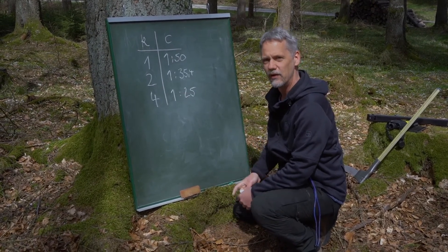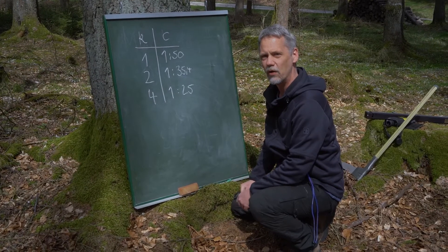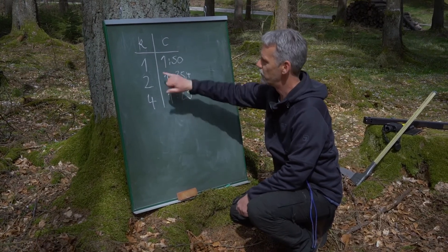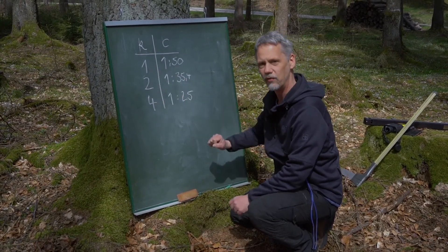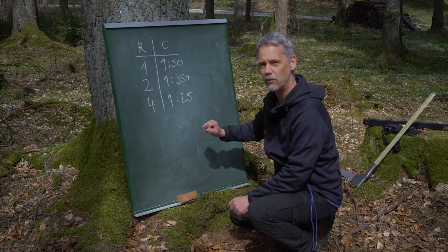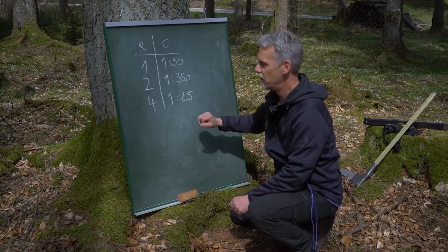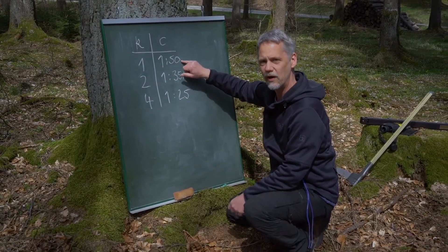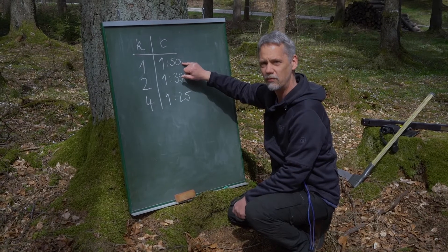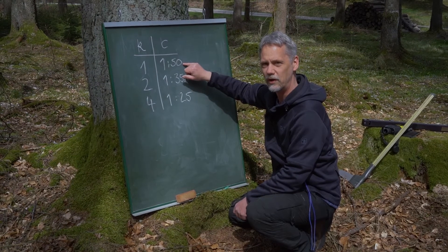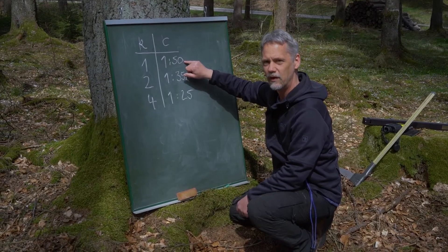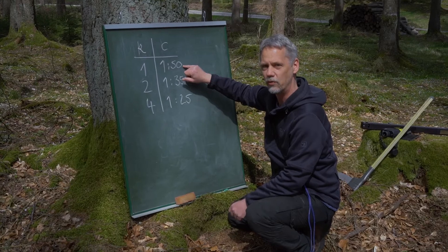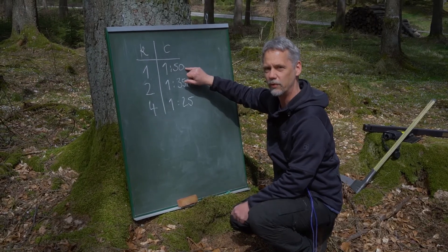A tree can only be included — for example in the case of counting factor number one — if the distance is less than 50 times the diameter of the tree. If the distance is larger, the tree would not be included in our sample.